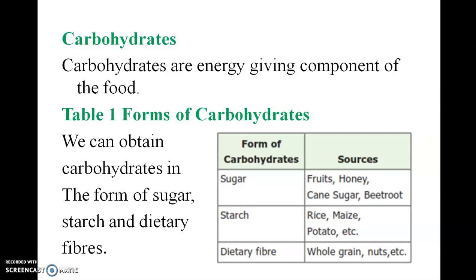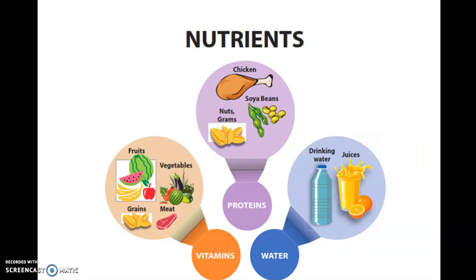Carbohydrates are the energy-giving component of food. We obtain carbohydrates in the form of sugar and fiber. Sources of sugar include fruits, honey, cane sugar, and beetroot. Sources of starch include rice, potato, etc. Dietary fiber comes from whole grains and nuts. Proteins are obtained from nuts, grams, soya beans, and chicken. Water comes from drinking water and juice. Vitamins are obtained from fruits, vegetables, grains, and meats.